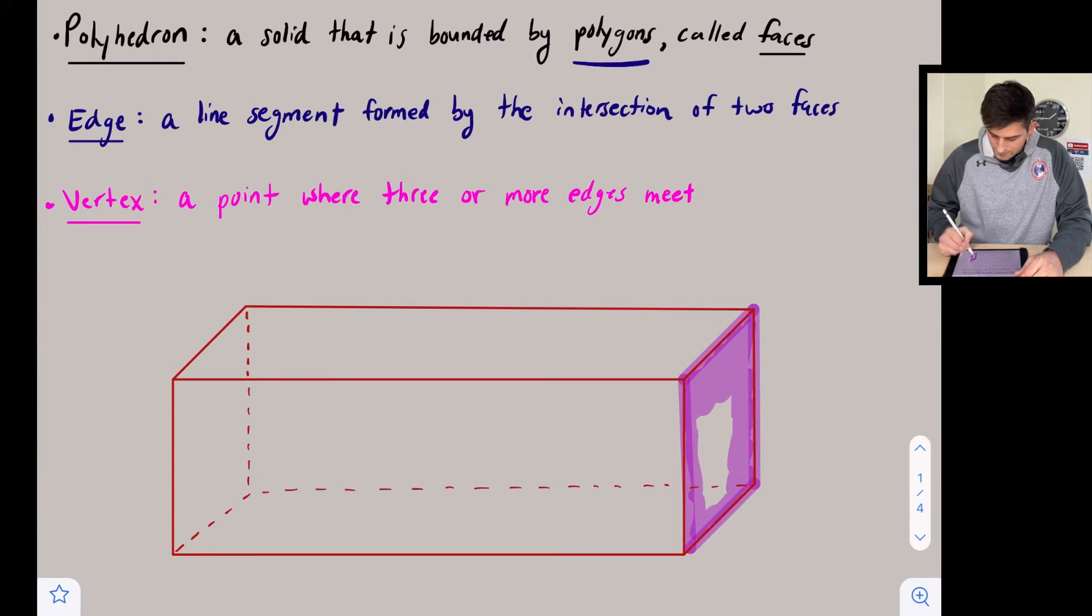So here we have six faces: one on the top, one on the bottom, two on the sides, and two on the front and back.